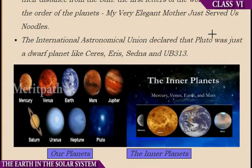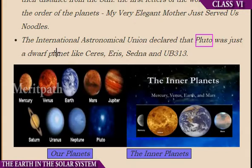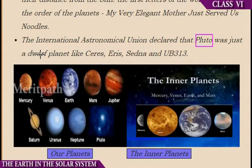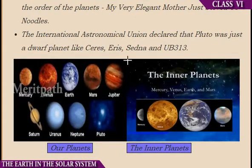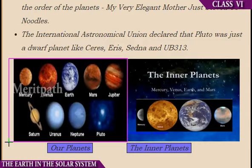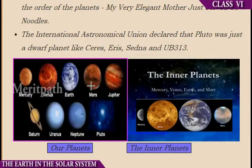Till the year 2006, Pluto was also considered a planet. But during a meeting of the International Astronomical Union, the scientists decided that it should be considered as a dwarf planet. Here we can see our planets: Mercury, Venus, Earth, Mars, Jupiter, Saturn, Uranus, Neptune, and the dwarf planet Pluto.